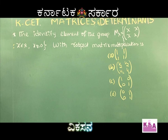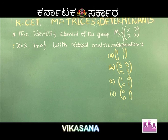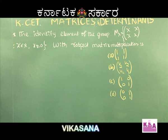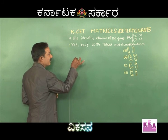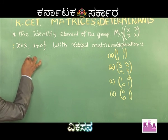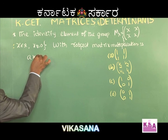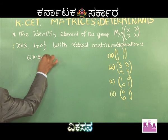The question is: find the identity element of the group Mx = {[x, x; x, x] such that x is a real number and x not equal to 0} with respect to matrix multiplication. Let's talk about the basic idea. Identity element with respect to multiplication: if a is an element and e is an identity element with respect to binary operation star, then a star e is equal to a.